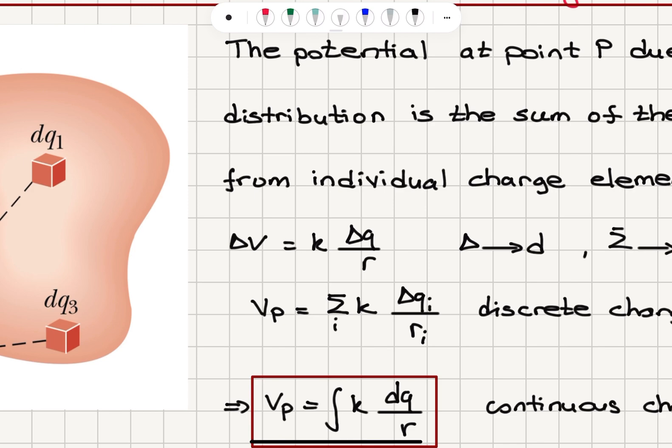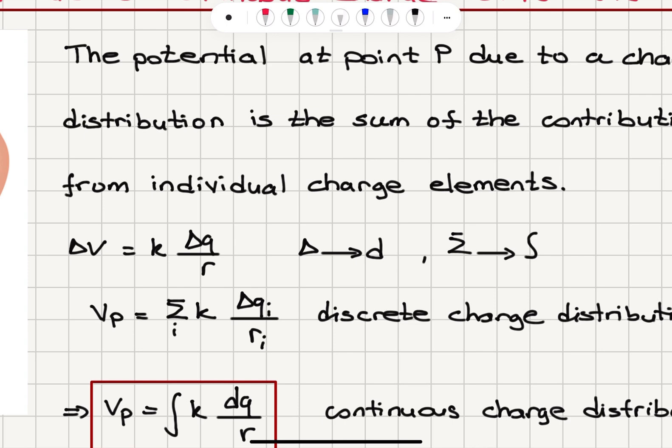Now in the limit this delta becomes a differential d. The summation that we have for the total contribution will turn into an integration.